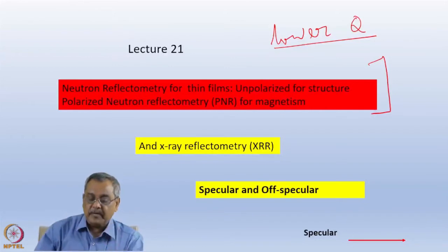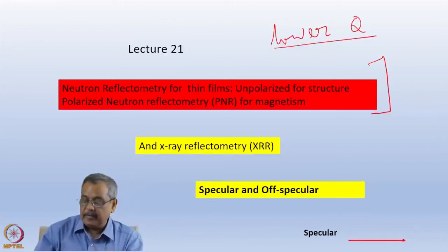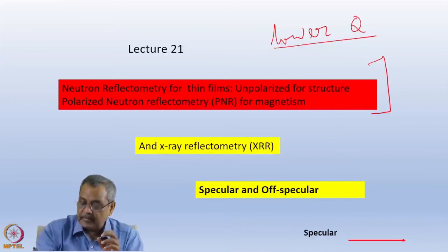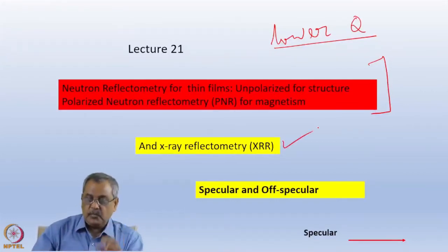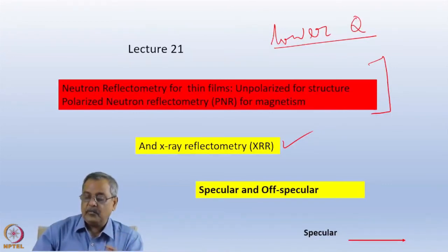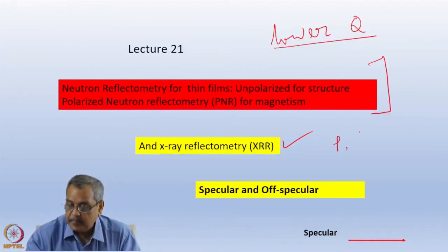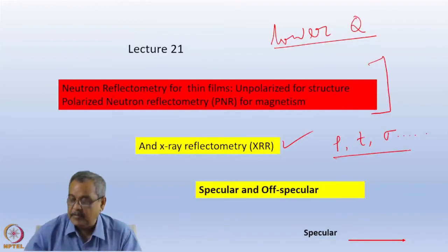Neutron Reflectometry and X-ray Reflectometry are very close — they are close cousins as experiments, very similar and can be done on the same sample provided the density is allowed. I will also be discussing X-ray Reflectometry partly and will show that both can be used for understanding mesoscopic structure of thin films in terms of density, thickness, interface roughness, surface roughness, etc.